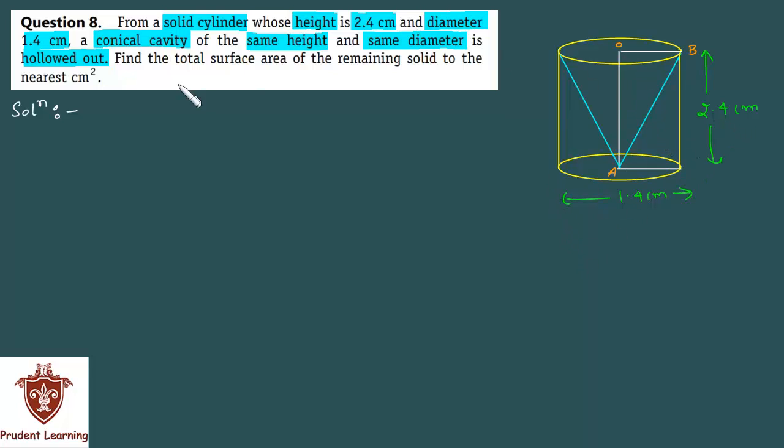With this information, we have to find the total surface area of the remaining solid to the nearest cm². This conical cavity is cut out. After the remaining portion of the remaining solid cylinder, the total surface area will be found.